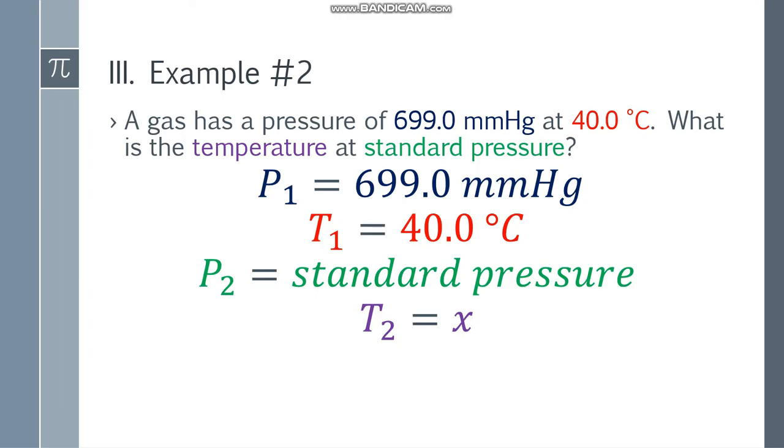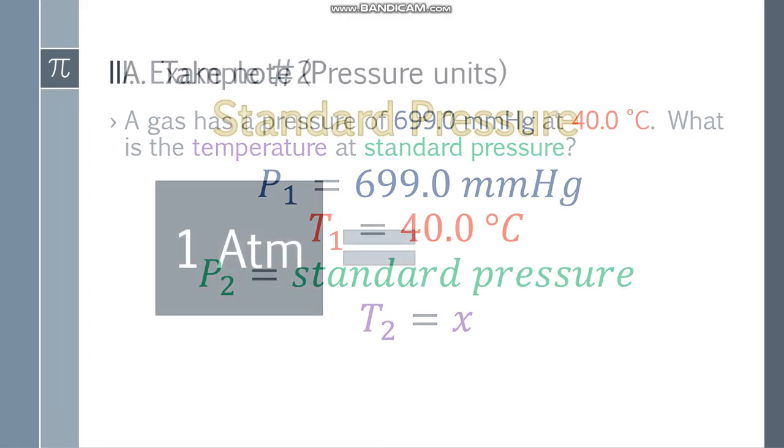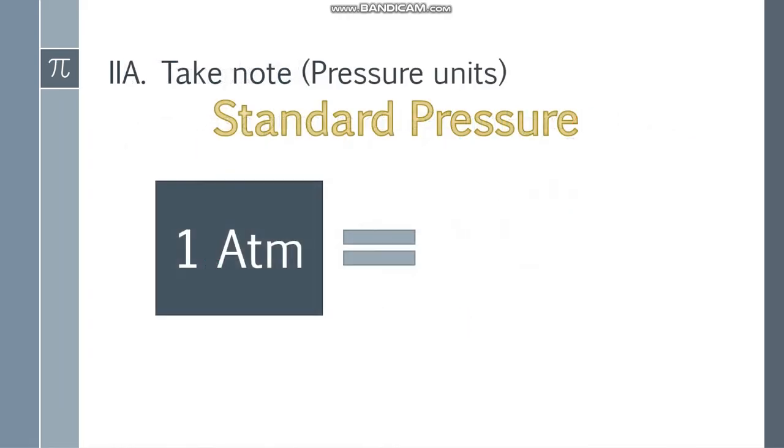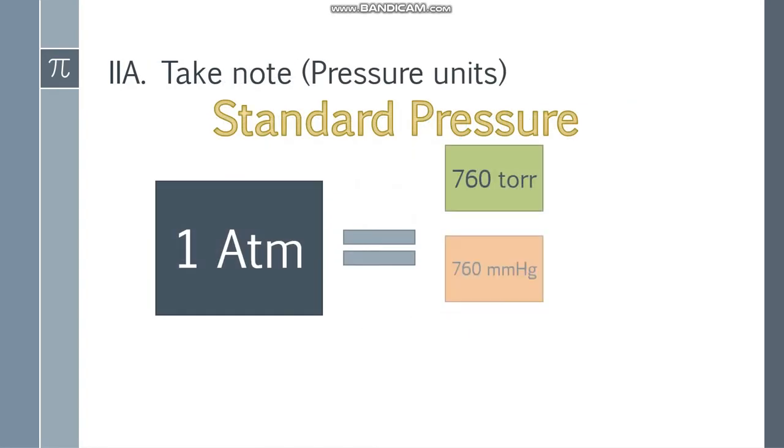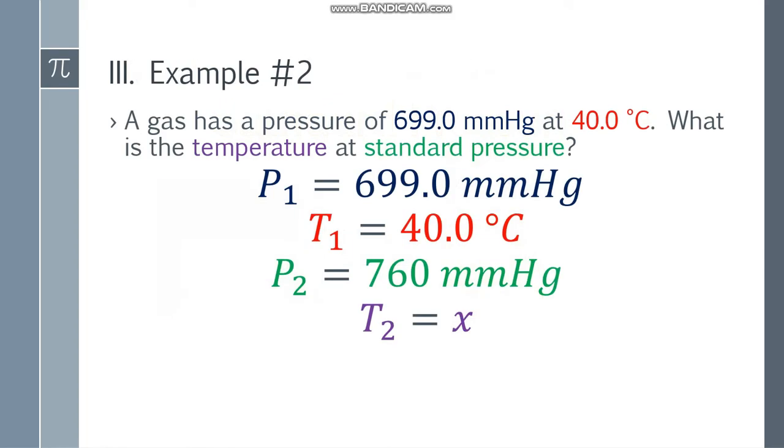Check: 40 degrees Celsius needs to be changed to Kelvin. What about standard pressure? Since mmHg is used, we need to use mmHg. So we have 760 mmHg - that's the standard pressure for mmHg. Let's go back and substitute: 40 plus 273.15 becomes 313.15 Kelvin.